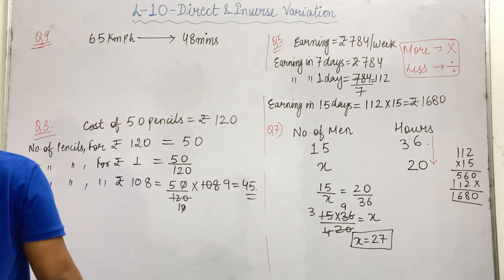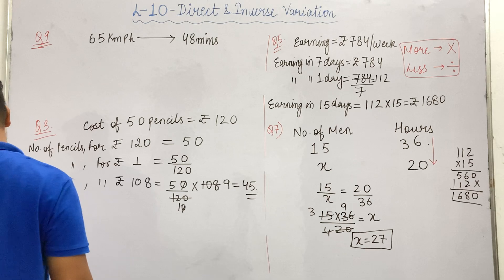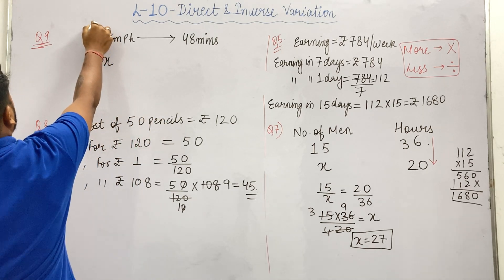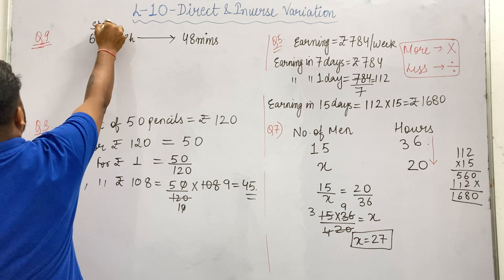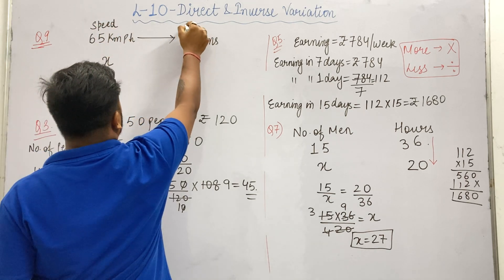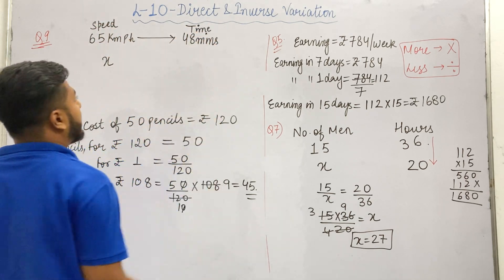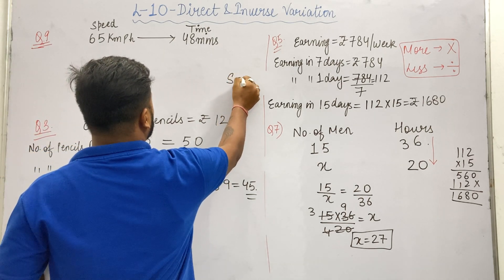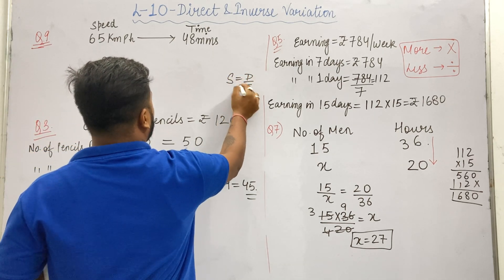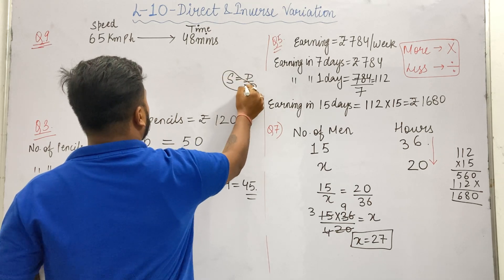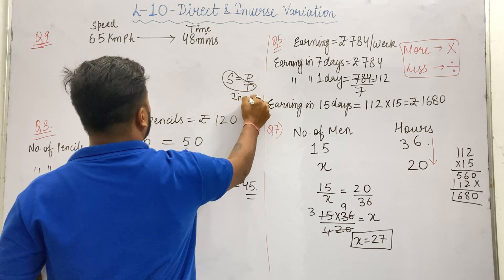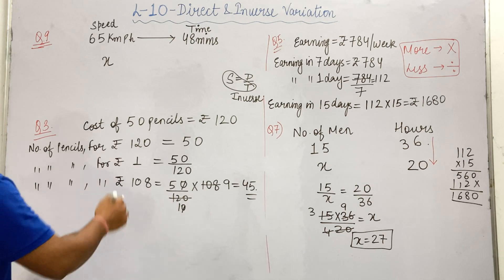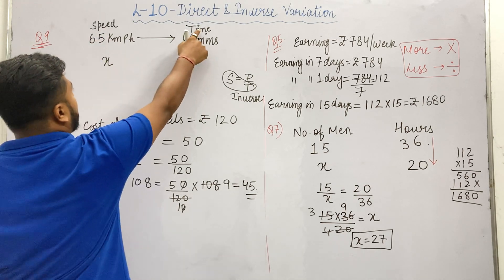Now we have speed on one side and time on the other. Speed equals distance upon time, so speed and time follow inverse variation. Because it is inverse variation, we write speed on one side and time on the other side, then apply the inverse variation method to find the required speed.